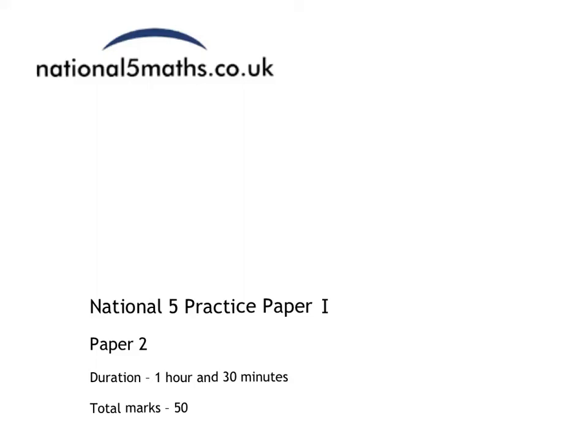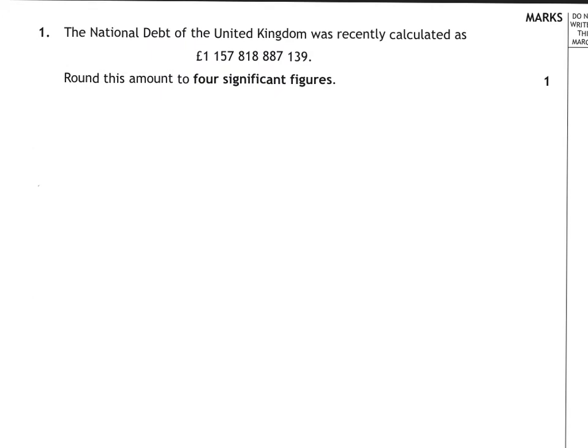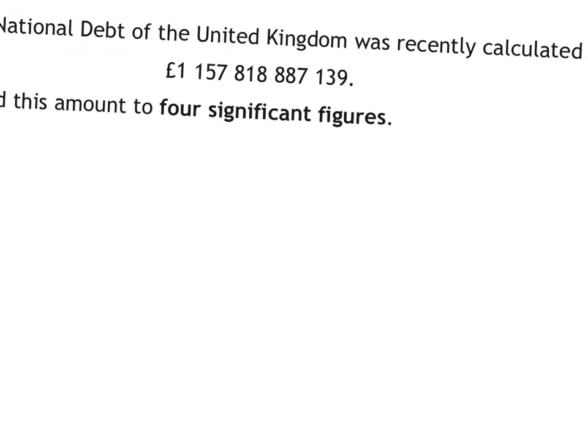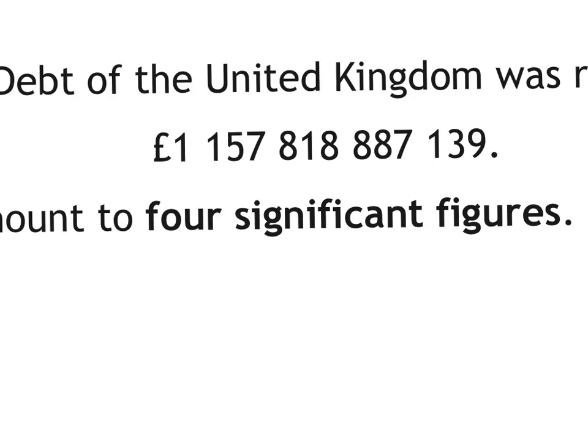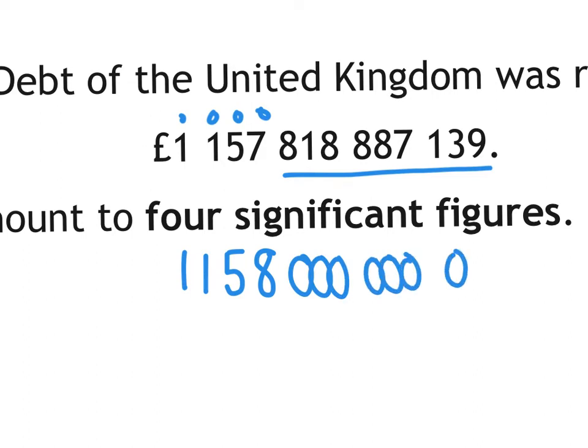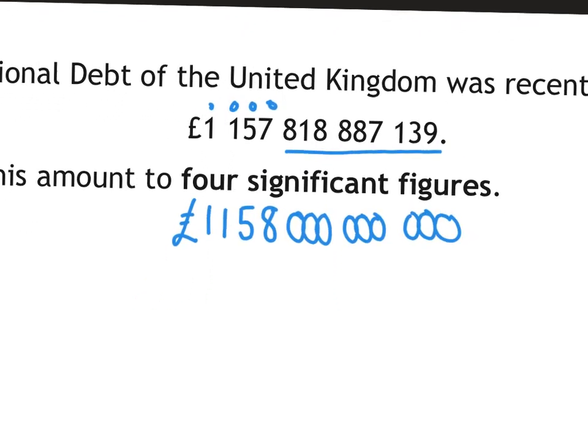This is practice paper 2 of paper 1, so we're allowed to use a calculator for this one. Question 1 wants us to round to 4 significant figures. I'm just going to make this a bit bigger. So my method is I go 1, 2, 3, 4. These are the numbers that are staying. So 1, 1, 5, and then I decide about the 7. The next number is an 8, which means that 7 will go up to an 8. And then all these other digits have to become 0s for the place value. So I've got 3 zeros. That is my answer to 4 significant figures.